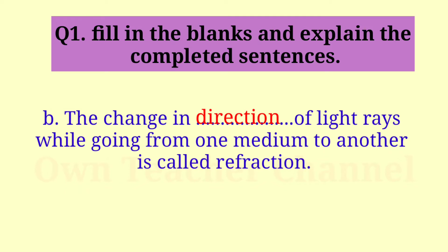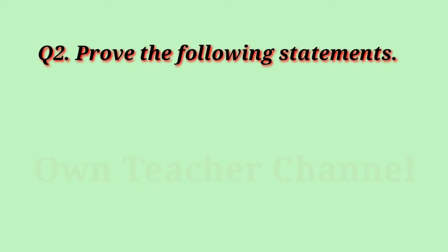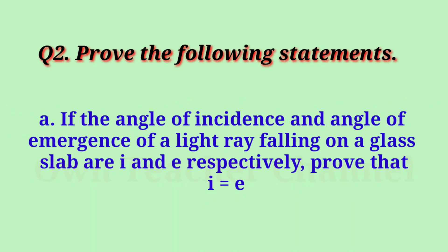Light changes its direction when passing from one transparent medium to another transparent medium. This is called the refraction of light. Question 2: Prove the following statements. (A) If the angle of incidence and angle of emergence of a light ray falling on a glass slab are i and e respectively, prove that i = e.